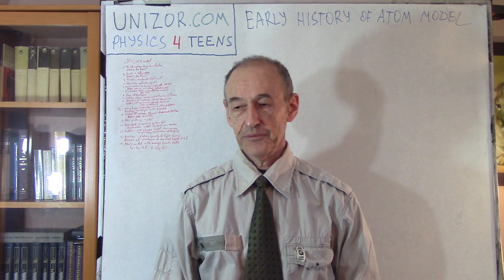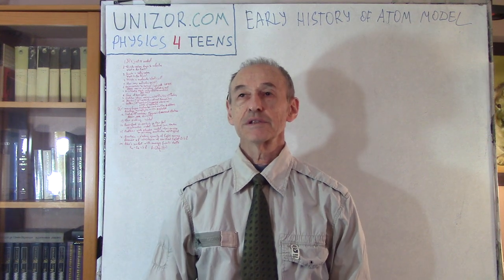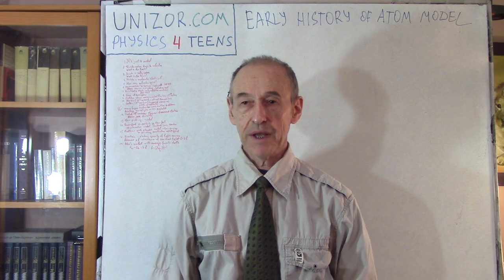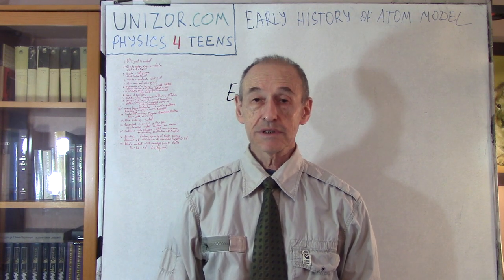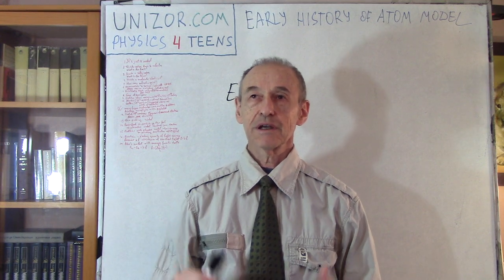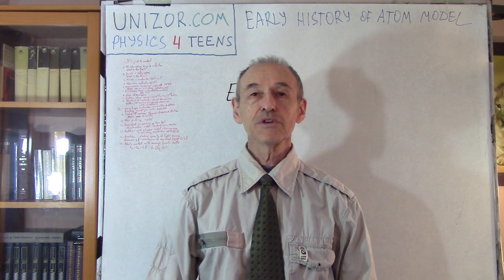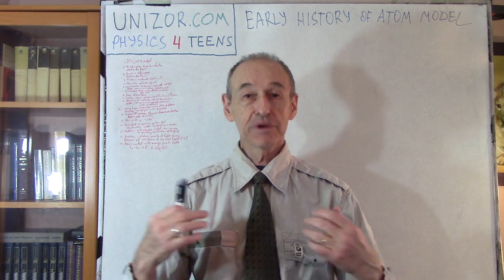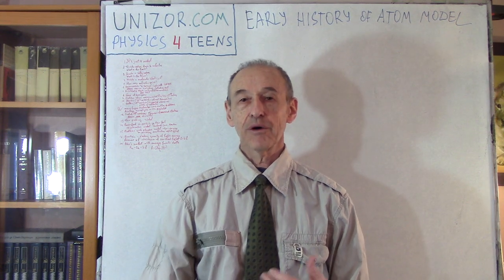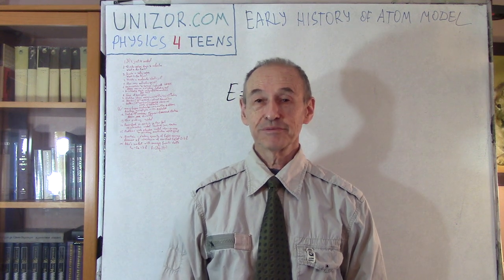That's it for the basic introduction into the history of the development of our view — our model. We are researching our model, so this is a very simple introduction into the progress of our thoughts about what matter is. I suggest you read the notes for this lecture. I would like you to feel that the whole thing is progressing and it's still progressing right now — we don't know what nature actually is, we build the model, we make experiments, and if the theory corresponds to whatever we see in experiments, then we are happy. Thanks very much and good luck.